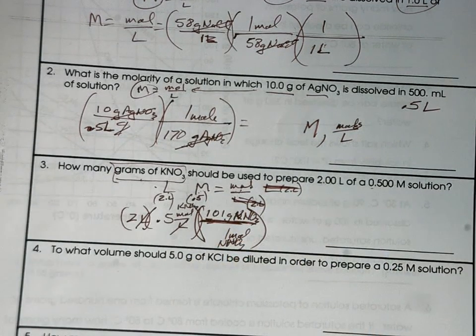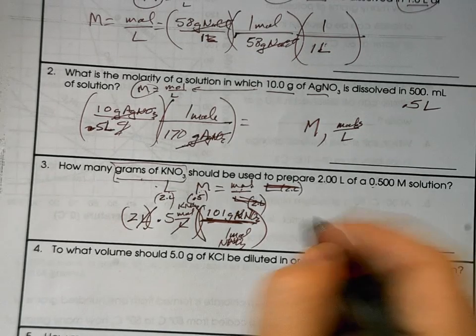So in this problem, you're going to be doing, it looks like 2 times 0.5 times 101 will give you whatever your answer is going to be on that one.